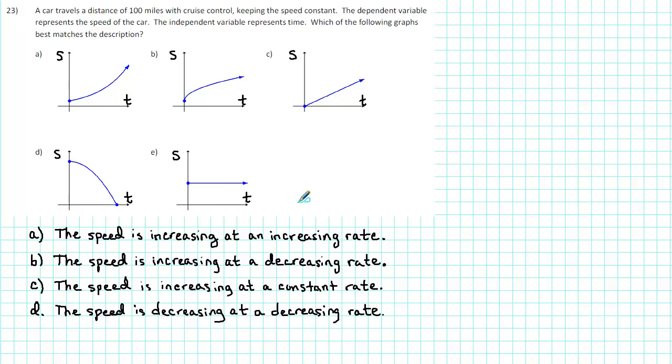Finally, in graph E, the speed graph is neither rising nor falling. It's remaining steady or constant. So the speed is constant.